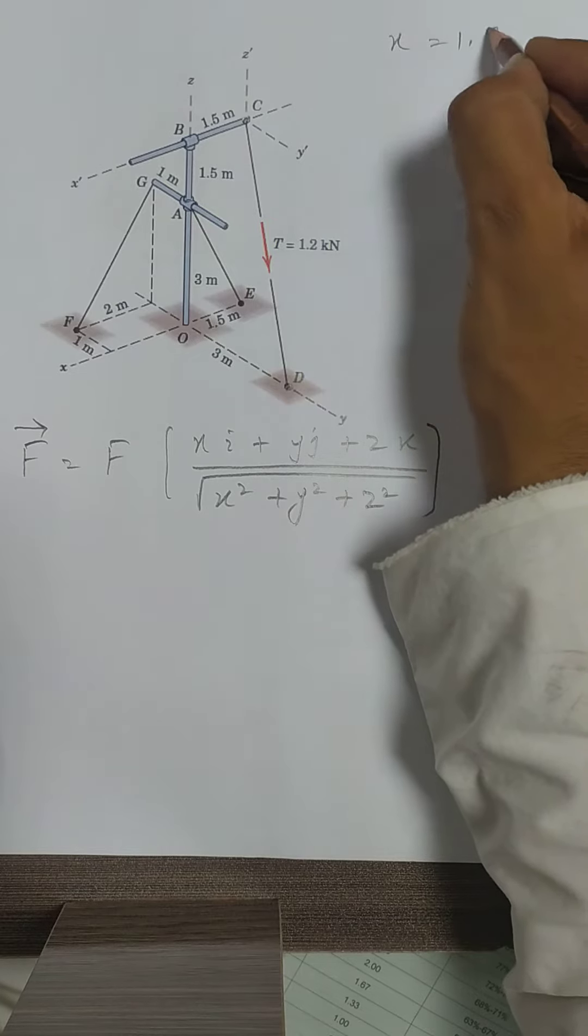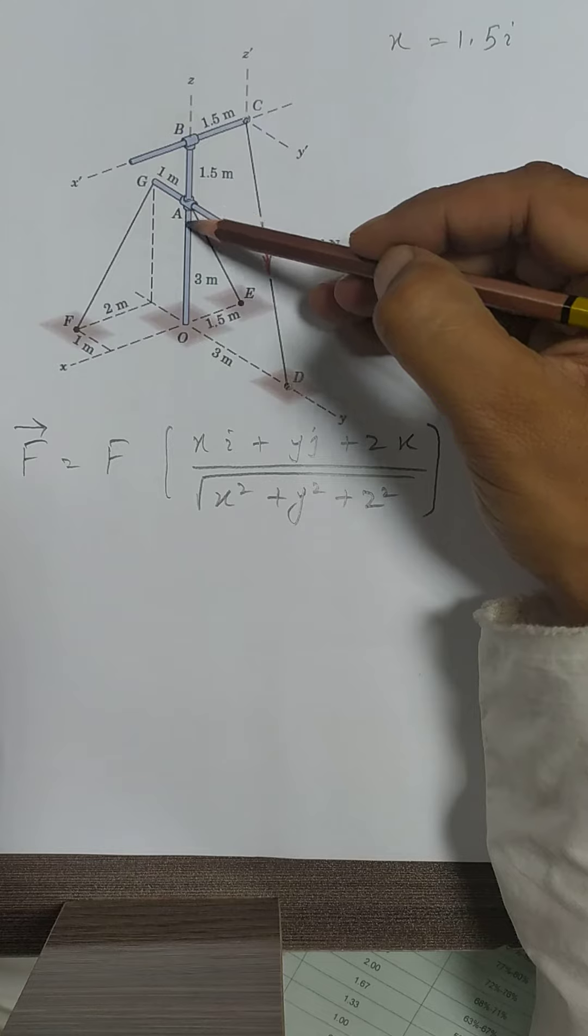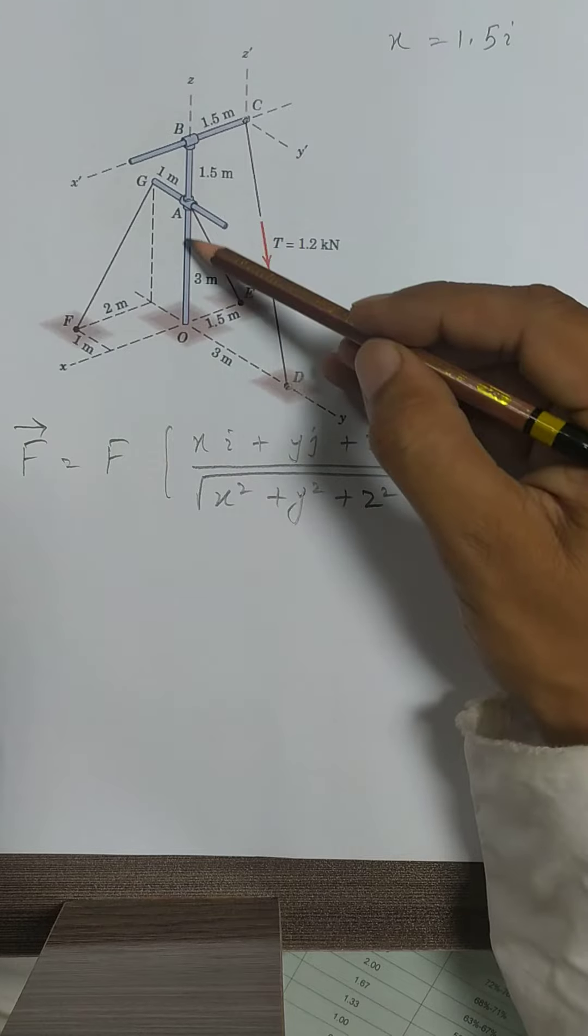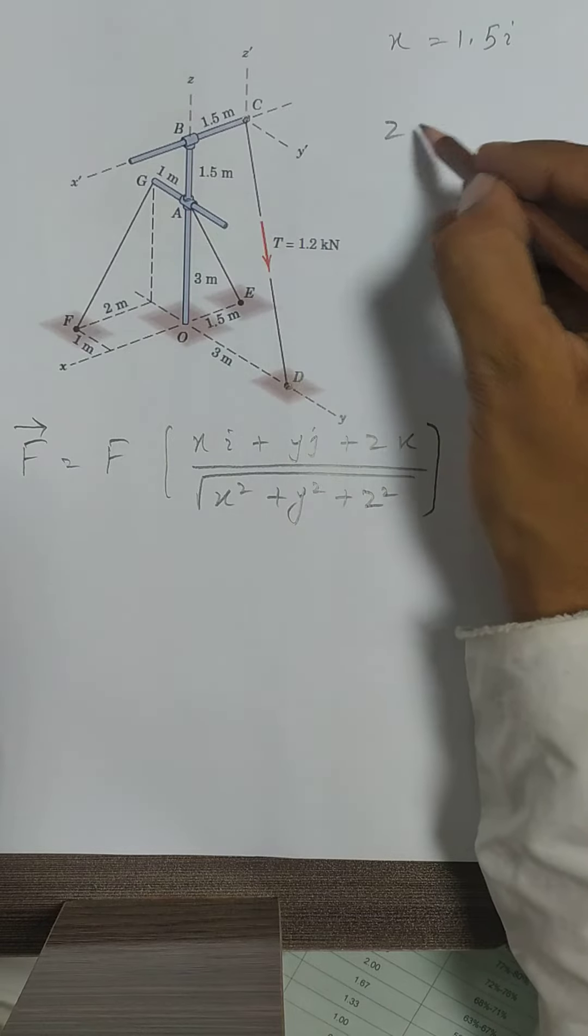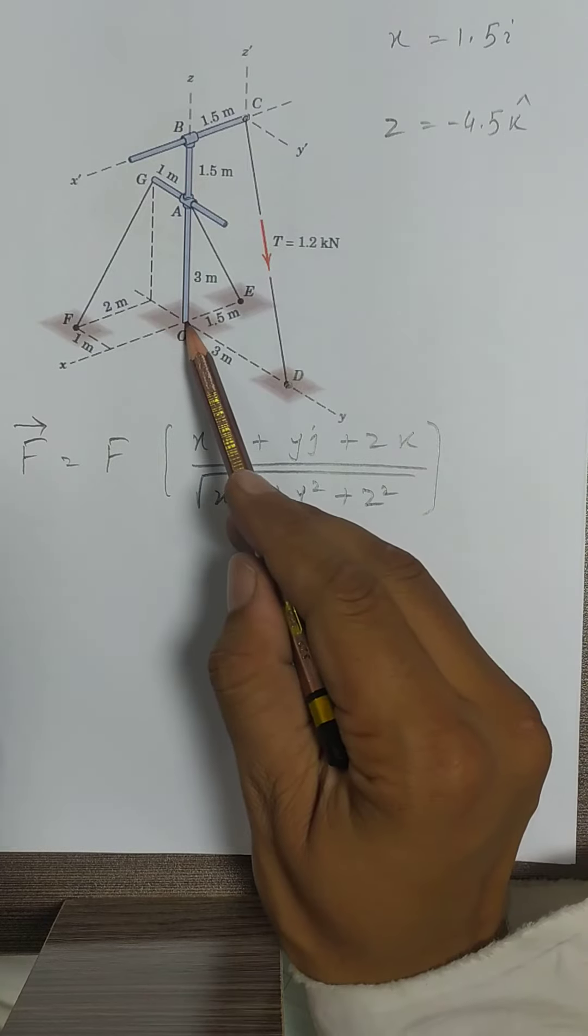Now moving downwards, it will be up as positive z, down will be negative z. So we have moved 1.5 plus 3, so that will be equal to minus 4.5 k. And from here we have to go to D point.